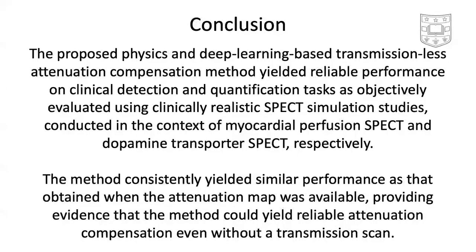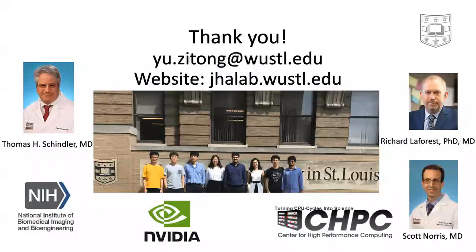In conclusion, the proposed physics and deep learning-based transmission-less attenuation compensation method yielded reliable performance on clinical detection and quantification tasks, as objectively evaluated using clinically realistic SPECT simulation studies conducted in the context of myocardial perfusion SPECT and dopamine transporter SPECT respectively. The method consistently yielded similar performance to that obtained when the attenuation map was available from a CT scan, providing evidence that the method could yield reliable attenuation compensation even without a transmission scan. These results motivate further validation using phantom and clinical studies. Finally, we thank our collaborators, lab members, the HGPC, and funding agencies. If you have any questions, please join the Slack channel or email us. Thank you.